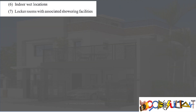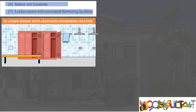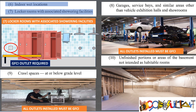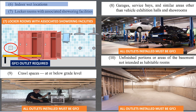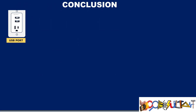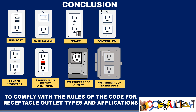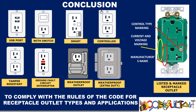GFCI outlets are also required in all locations where water or other liquid can drip, splash, or flow on outlets. Outlets in locker rooms with associated showering facilities must be GFCI. Garages and accessory buildings — all receptacle outlets must provide GFCI. Same with crawl spaces and unfinished basements not intended as habitable rooms. In conclusion, these outlets are available in the market with some having special features for particular purposes and some for convenience. Whatever the purpose, all materials must be listed and marked to ensure the safety of everyone and property.